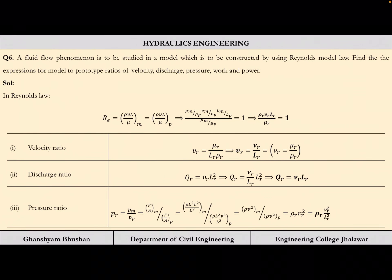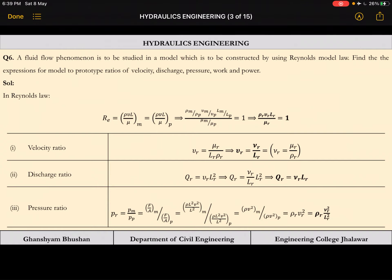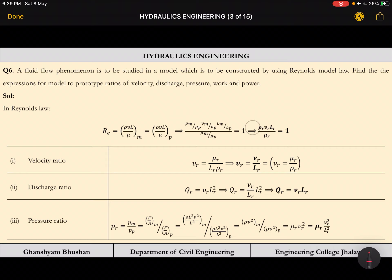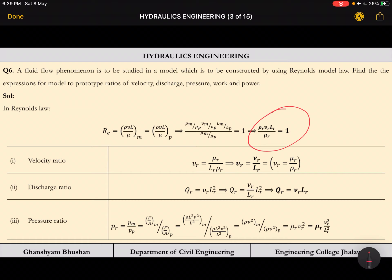In Reynolds law, rho*V*L/mu for model and prototype must be the same, so rho_r * Vr * Lr / mu_r = 1. From this equation, velocity ratio Vr = mu_r / (rho_r * Lr), and since mu/rho equals nu (kinematic viscosity), we get Vr = nu_r / Lr directly.